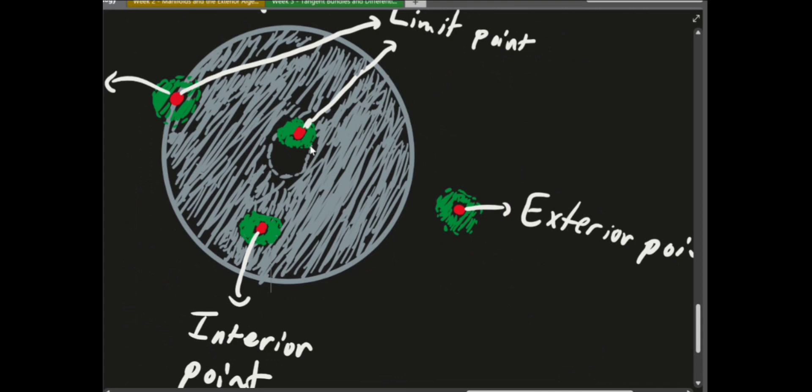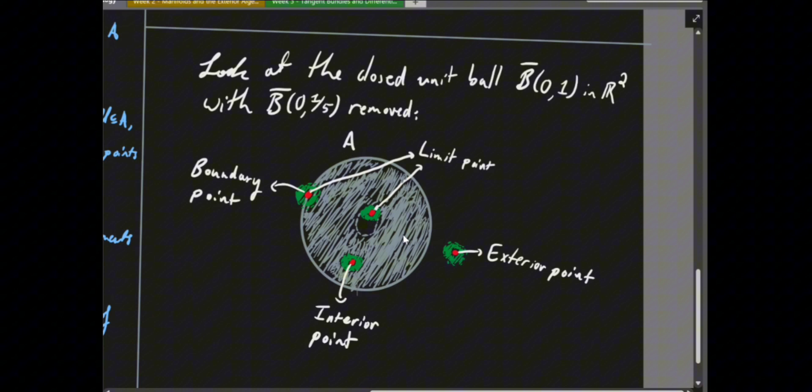Another way to check this is to take the complement and check that it's open. The complement on the inside gives a closed ball, which is not open. The complement on the outside is an open set, but the inside part being not open means the overall complement is not open.